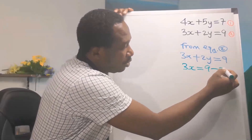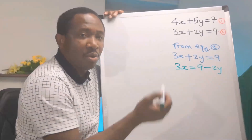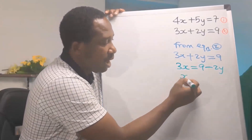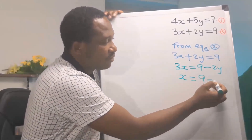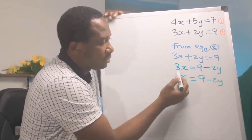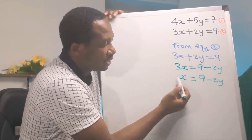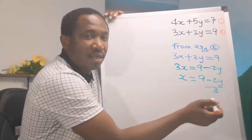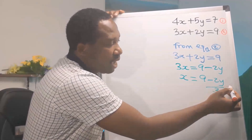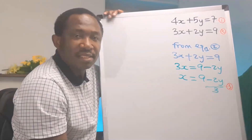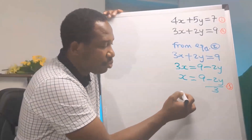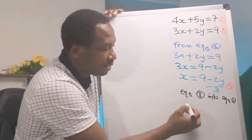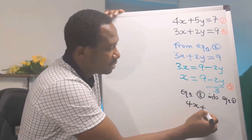The 2y will move and become minus 2y. We want to make x the subject, so we leave x on one side. On the other side we have 9 minus 2y, and 3 will divide across because it is multiplying x. This gives us x = (9 − 2y) / 3, which becomes equation 3.